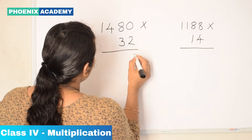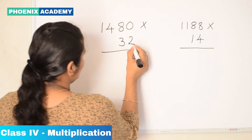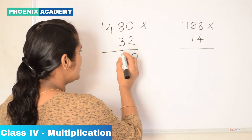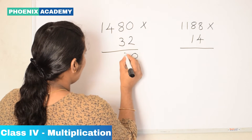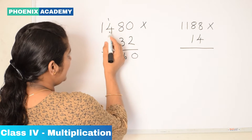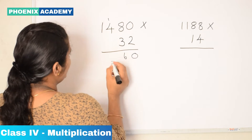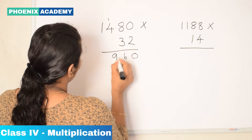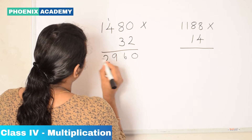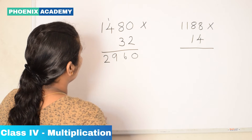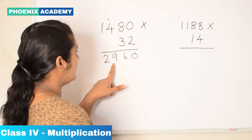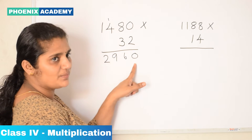2 times 0 is 0. 2 times 8 is 16 — write 6 and carry forward 1. 2 times 4 is 8, plus 1 carry gives 9. 2 times 1 is 2. We multiply 2 with the 4-digit number and write the partial product.